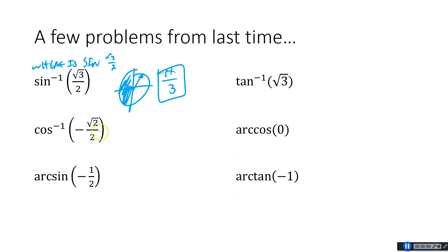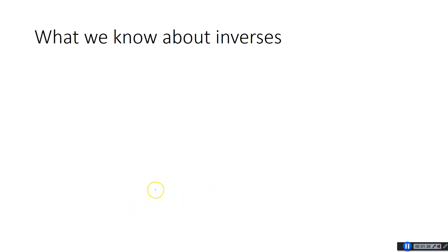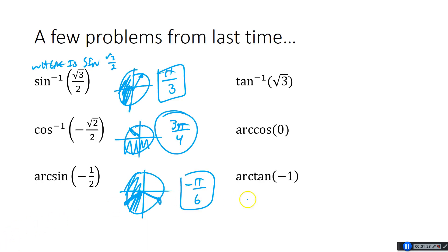Cosine inverse of negative root 2 over 2. Cosine uses the top half of the circle, negative root 2, that's going to be on the left side here, so it must be 3π over 4. Arc sine of negative 1 half, that's going to use the right side of the circle again, negative 1 half right here, that happens at negative π over 6. Remember, you cannot use 11π over 6 because that would go through the wall here. You definitely can't use 7π over 6, because even though sine is negative 1 half there, that's in no man's land.